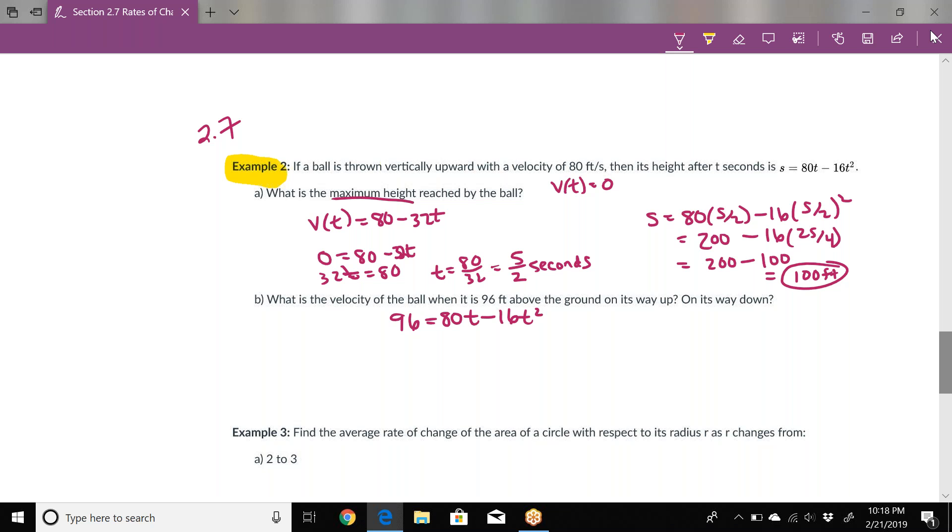I would move everything to the right by adding 16t² and subtracting 80t, just to get all of this together on the same side. We can pull out a 16, leaving t² - 5t + 6 = 0. That factors into (t - 2)(t - 3).